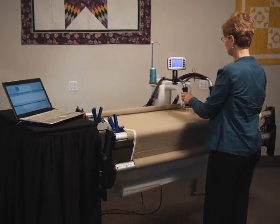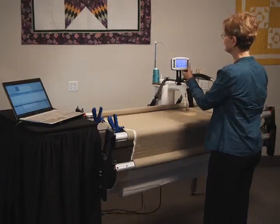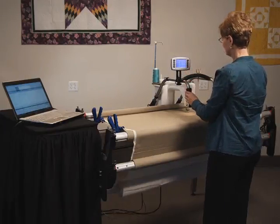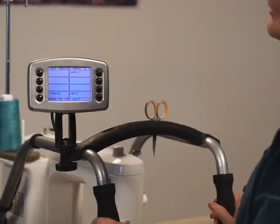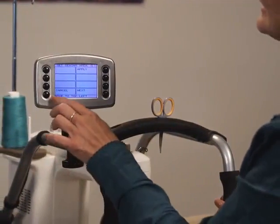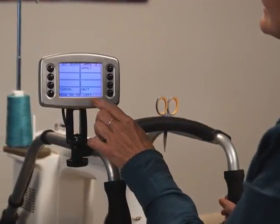We also recommend that you reset your quiltable area after you've advanced your quilt three or four times to ensure that an accurate work area is established in the system. Follow the prompts listed on the bottom of the display. These prompts will guide you through this process.